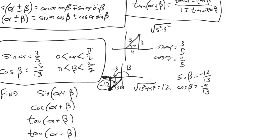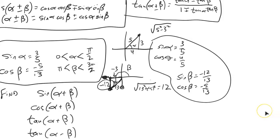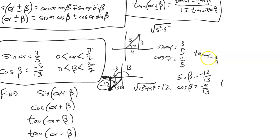I have all my pieces now: sine of alpha is 3/5, cosine of alpha is 4/5, sine of beta is −12/13, cosine of beta is −5/13. I also know tangent of alpha is 3/4, and tangent of beta — both numerator and denominator are negative — so negative 12 over negative 5, which is 12/5.